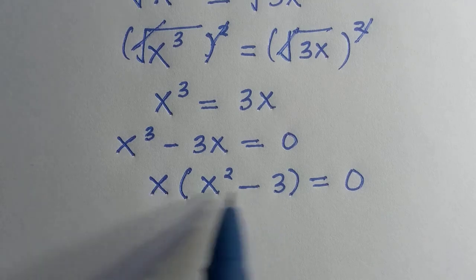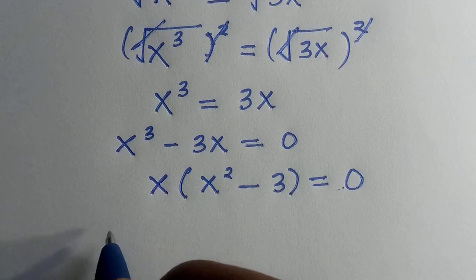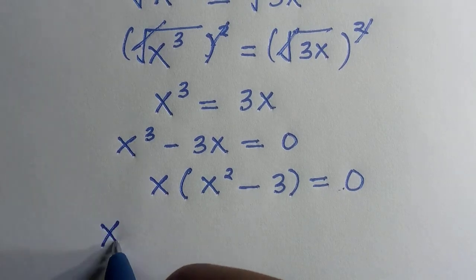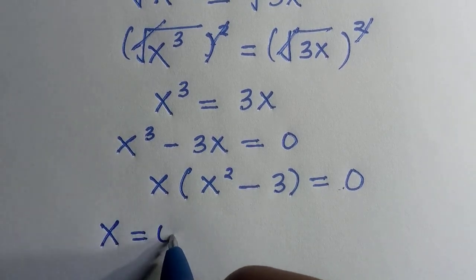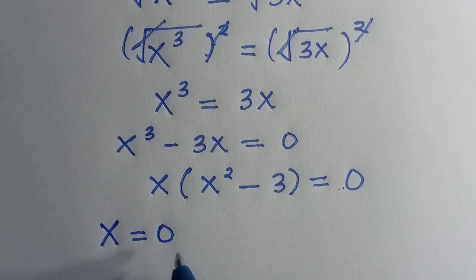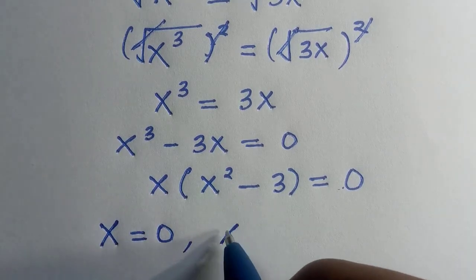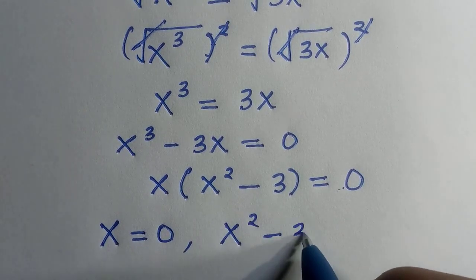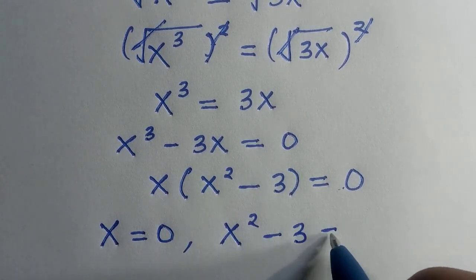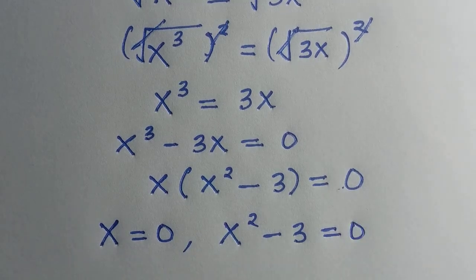To find the values of x that make this equation equal 0, we let each factor equal 0. Letting the first factor equal 0, we have x equals 0. Secondly, we have x to the power of 2 minus 3 equals 0.